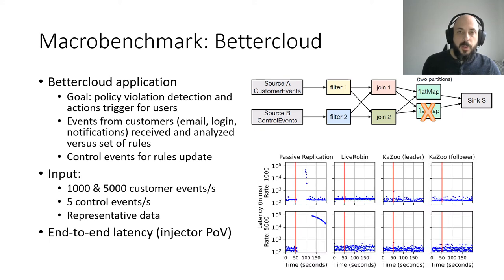As before, the x-axis is the time and the y-axis is the latency 99th percentile. We can see that, as in the micro-benchmark, dozens of seconds are needed for Flink to restart a new job. The catching up is much slower in the 5000 events per second rate. LiveRobin's 99th percentile is the highest, especially with a lower rate, but it is more stable.